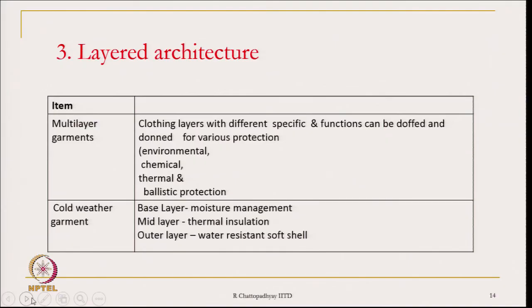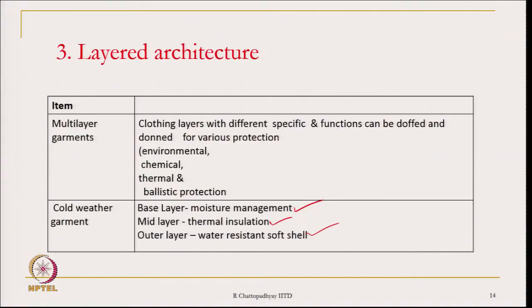Cold weather garments, if you look at them, use a layered architecture. There is a base layer for moisture management, a middle layer for thermal insulation, and an outer layer which is a water-resistant soft shell. Many cold weather garments, especially jackets, have three layers with three different functions: moisture management, thermal insulation, and a water-resistant or wind-resistant shell.